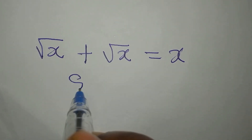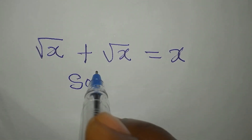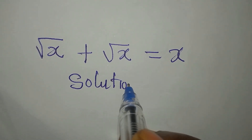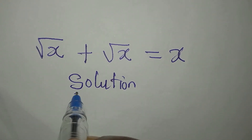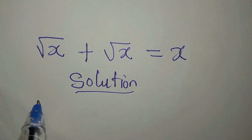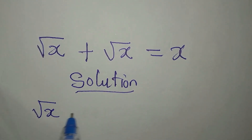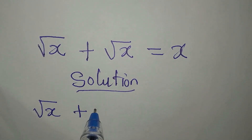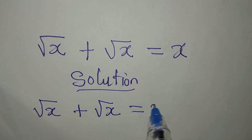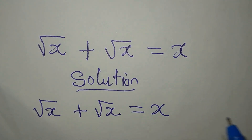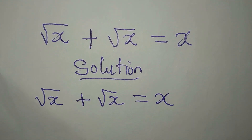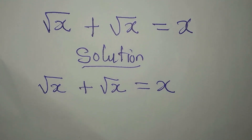Hello everyone. Here we have a problem to deal with: square root of x plus square root of x equals x. The question is, do you think this is possible?